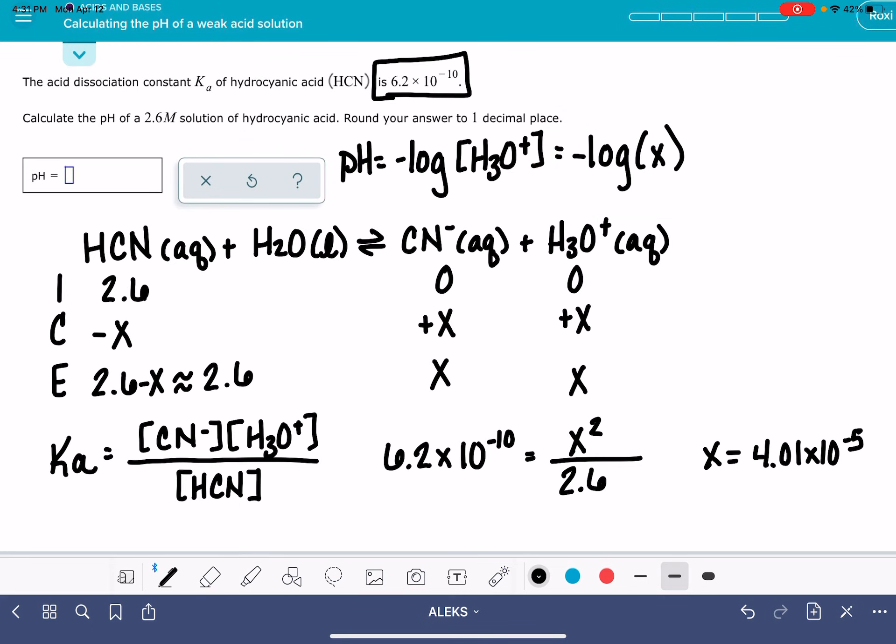And remember, that's what we're plugging into the pH equation. So negative log of 4.01 times 10 to the minus 5. That is 4.396. Alex says it wants one decimal place, so that's going to be a pH of 4.4.